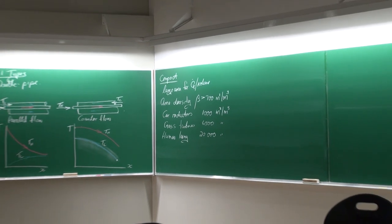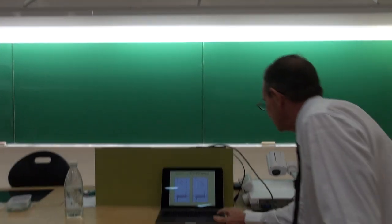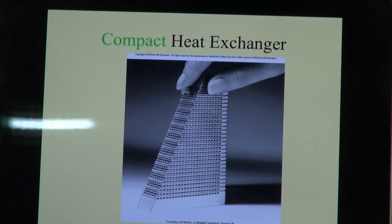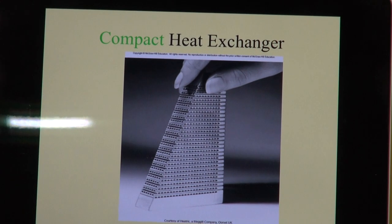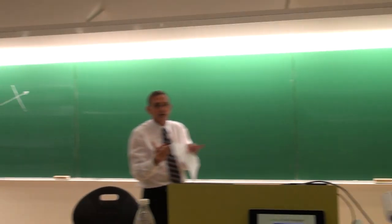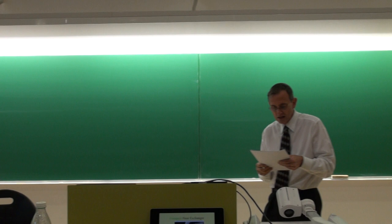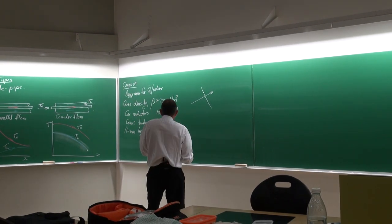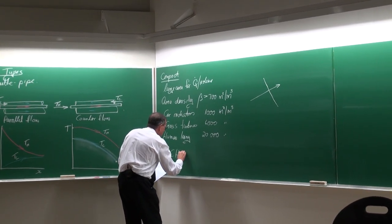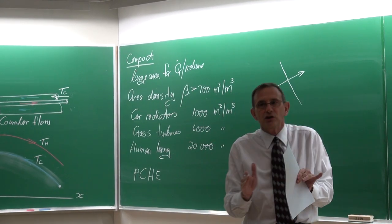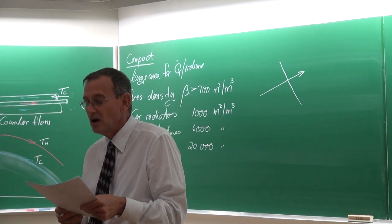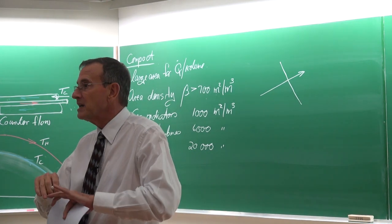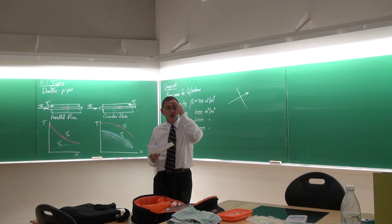In terms of compact heat exchangers, I want to show you a photograph. There are holes in one direction and holes in another direction through the same material. These are called printed circuit heat exchangers — PCHE. They make use of a method of etching to make channels of 1 to 3 millimeters, then diffusion bonding, and they can also generate different patterns in some of these channels.